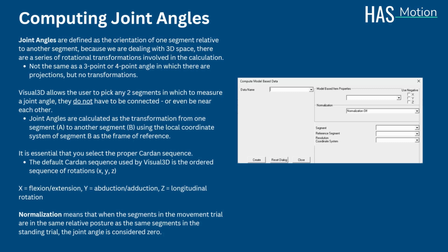Visual 3D lets you pick any two segments in which to measure a joint angle. They do not have to be connected or even be near each other. In practice, joint angles are calculated as the transformation from one segment A to another segment B using the local coordinate system of segment B as the frame of reference. It is essential that you select the proper Cardan sequence based on a complete understanding of what you are trying to measure. In Visual 3D, you can select the Cardan sequence that you want, which relates to your specific data.